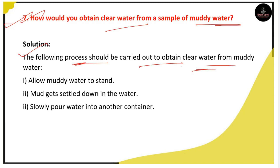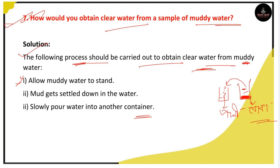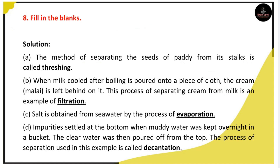First, allow the muddy water to stand so that the mud settles down at the bottom. Then slowly pour the water into another container. The method of separating the seeds of paddy from its stalks is called threshing.